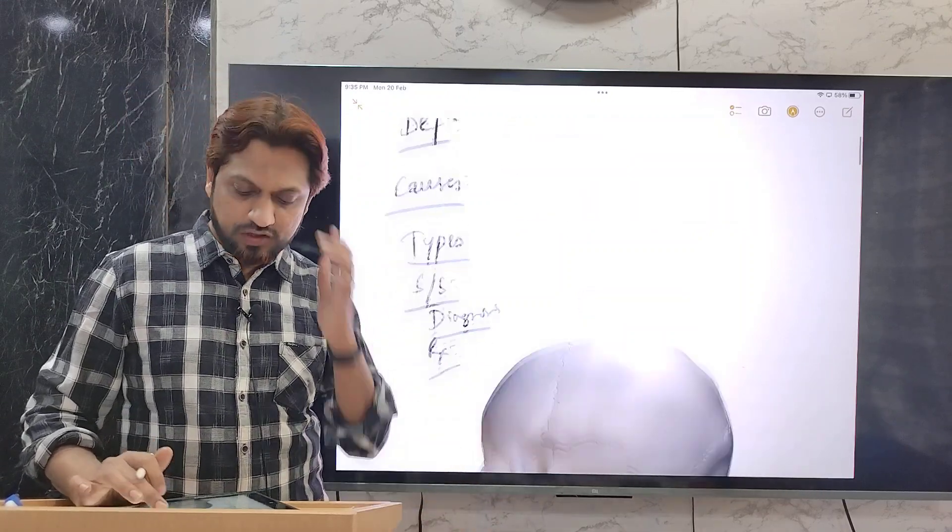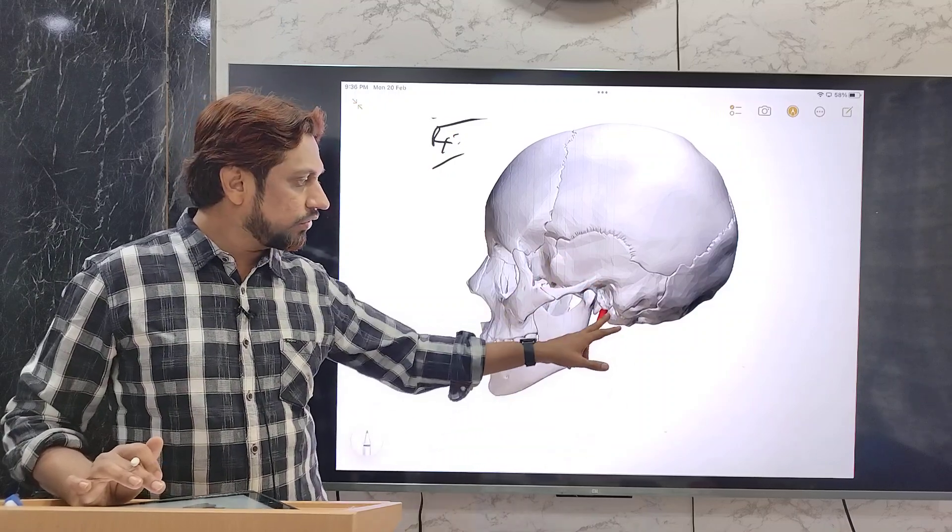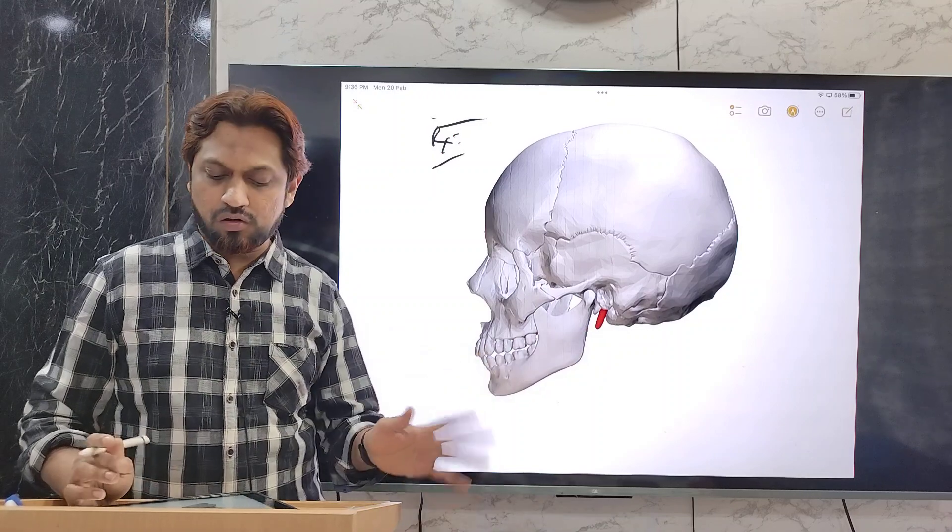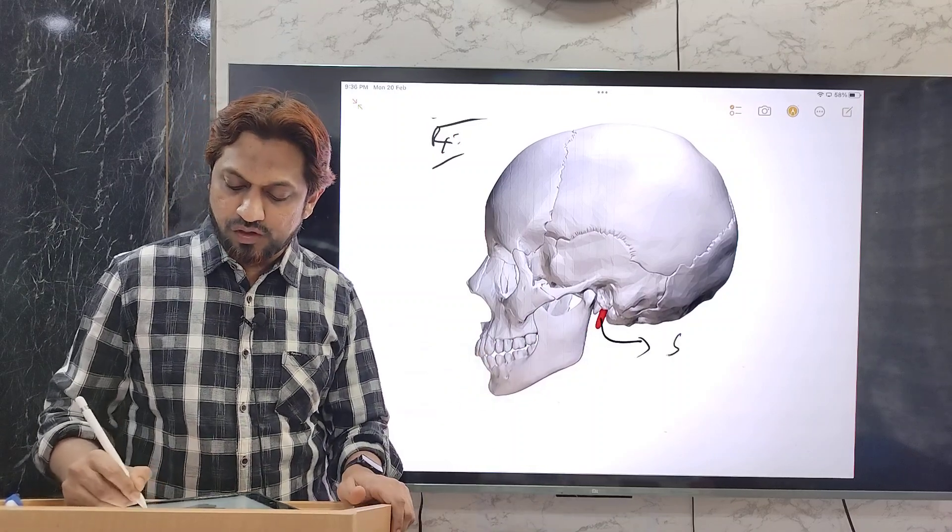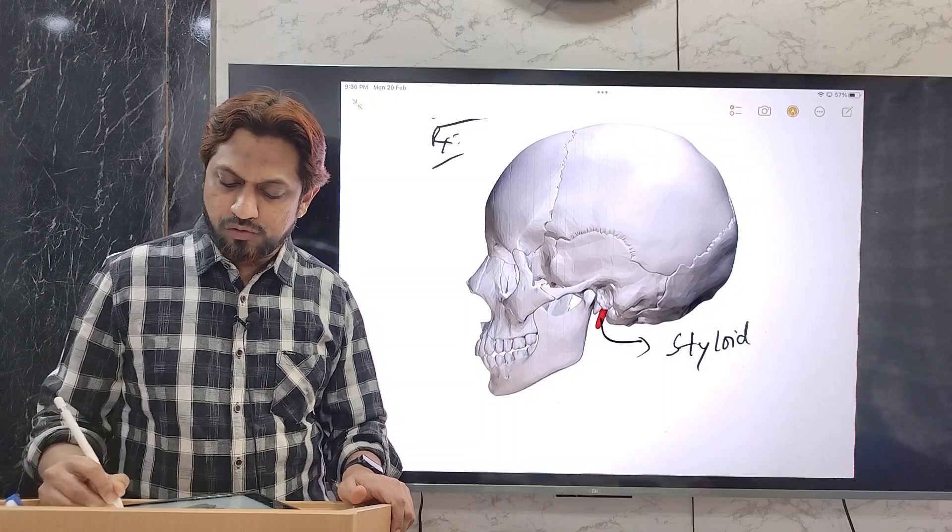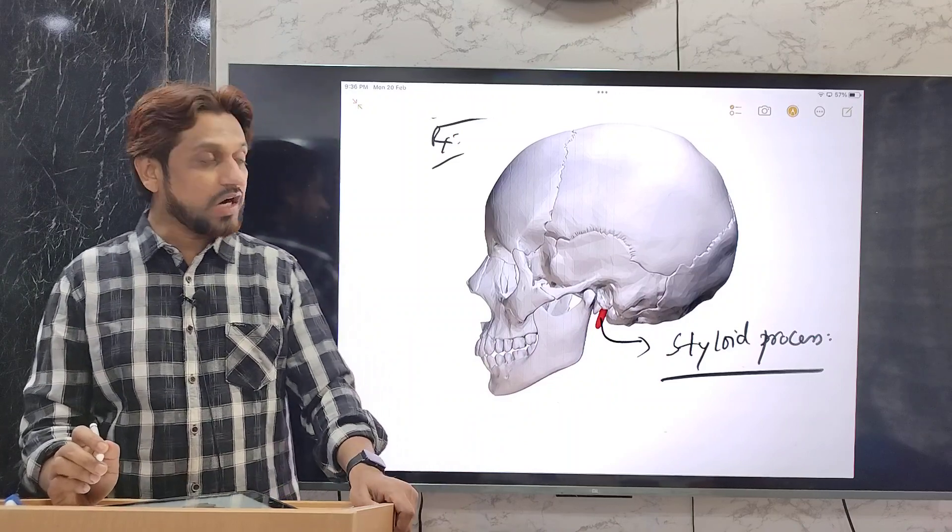What exactly is this? Before coming to the definition, I will just give you the background. So, this is the skull. This red color structure which is highlighted in red color, it is basically this styloid process. In the temporal bone, this projected bony projection, it is known as styloid process. Basic anatomy.